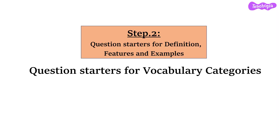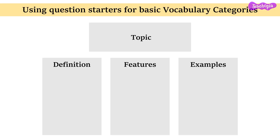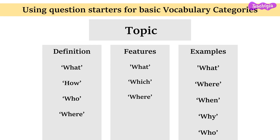Moving forward to step 2. Here we will use question starters for different vocabulary categories like definition, features and examples. If you remember, every topic will have three basic vocabulary categories — definition, features and examples. For definition, we can ask questions using what, how, who and where. If you want to find out more about the features category, we can begin questions with what, which and where. And if you want to ask questions about the examples, you can ask questions beginning with what, where, when, why and who.